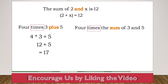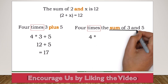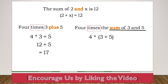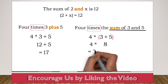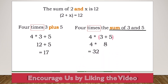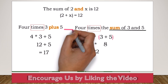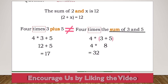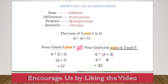For the second, '4 times the sum of 3 and 5,' we put the sum of 3 and 5 in parentheses: 4 times (3 plus 5). From order of operations, we do parentheses first: 3 plus 5 is 8, then multiply 4 by 8 to get 32. If we had not used parentheses, we would have solved it as 4 times 3 plus 5 and gotten 17 — which would be wrong. This is why we use parentheses for sum, difference, product, and quotient.